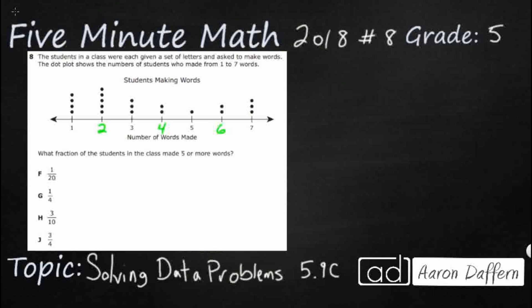So here's the interesting question: What fraction of the students in the class made 5 or more words? And you see all of our answer selections are fractions, and there's barely even numbers on this dot plot. The only numbers are down on the scale on the bottom. There's just a whole bunch of dots. How in the world are we supposed to turn this into a fraction? Well, let's see if we can at least identify what we should be looking for.